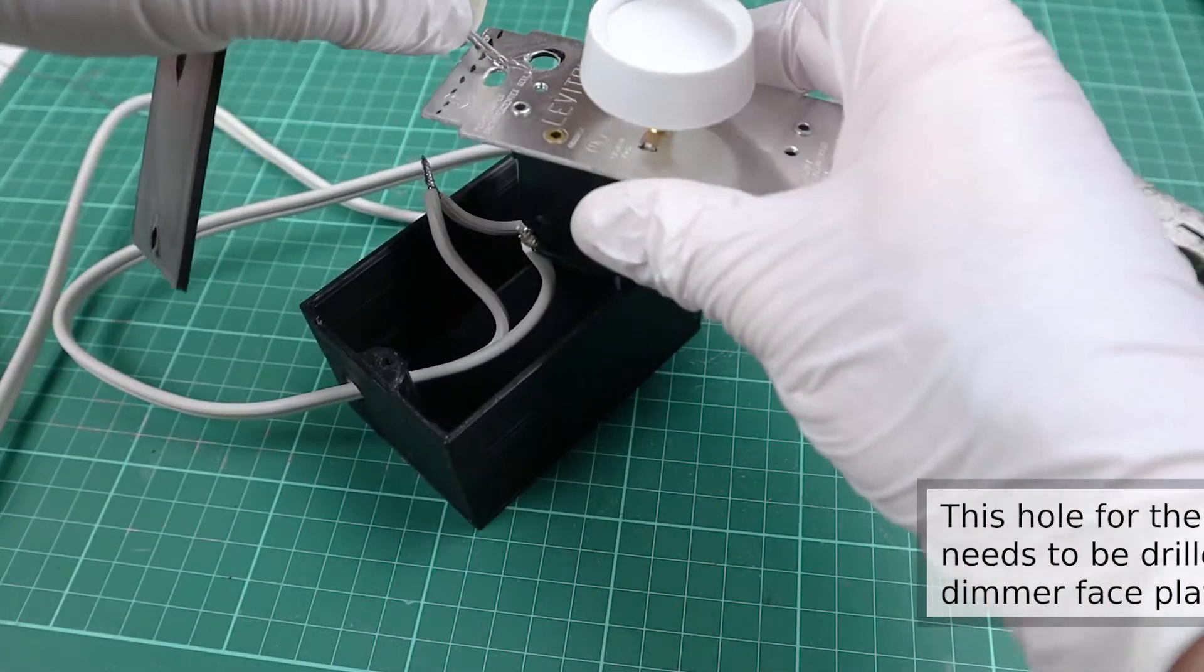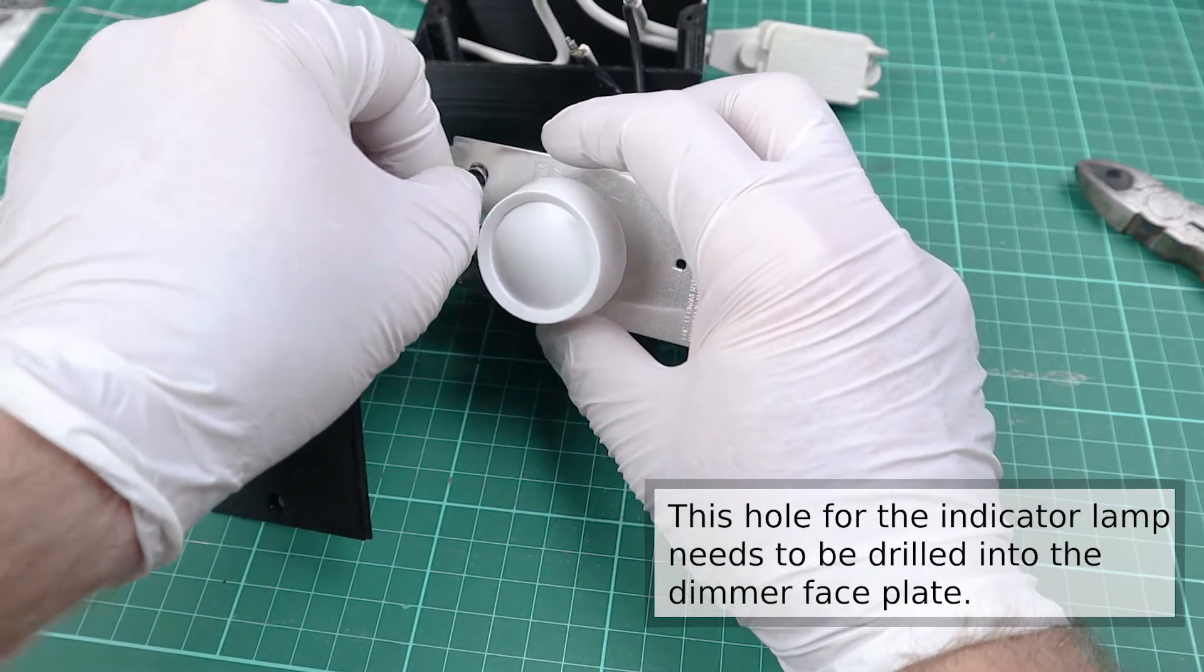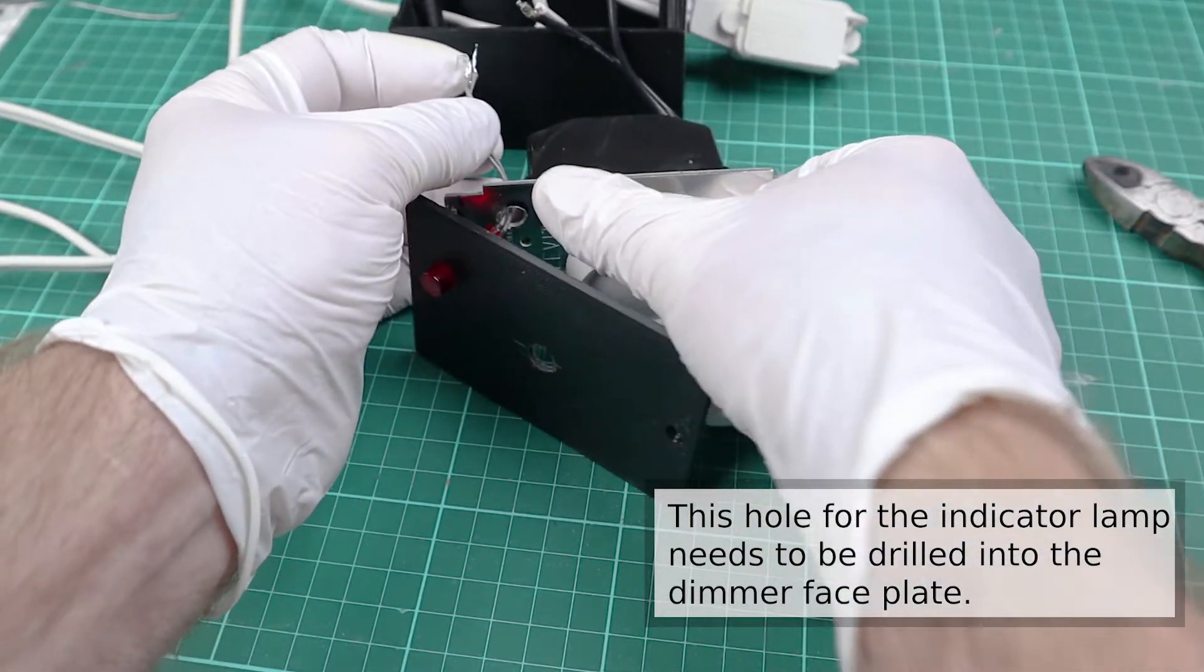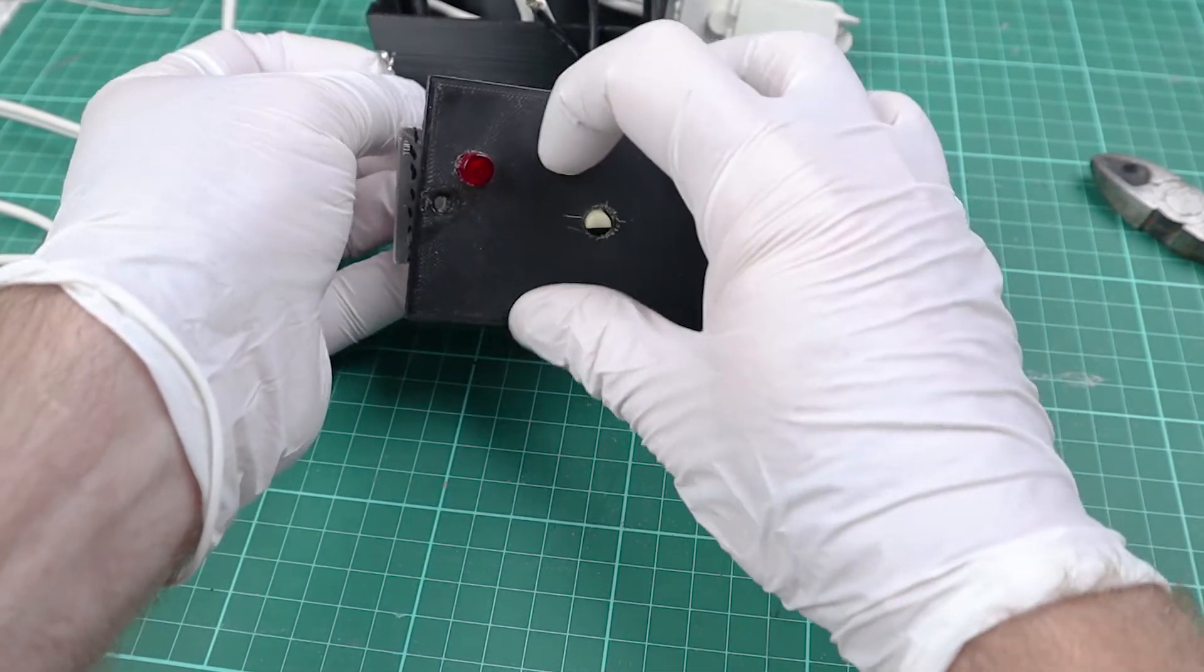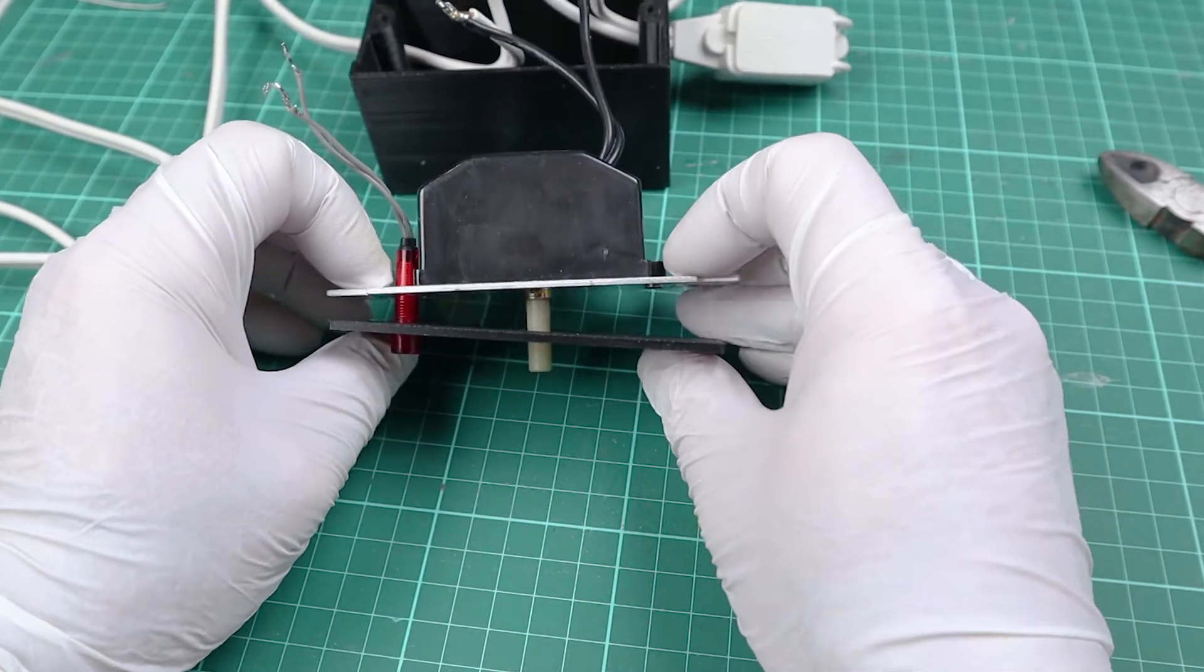If you do decide you want to use the optional indicator light, it again has no positive or negative really. Both are just the same colored wires, and one of them gets connected to the neutral on the extension cord, and the other one gets connected to the hot side of the receptacle.